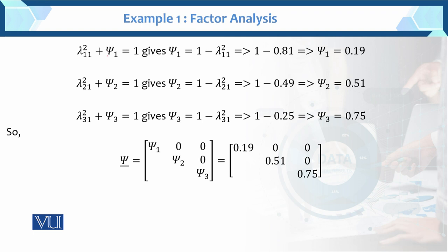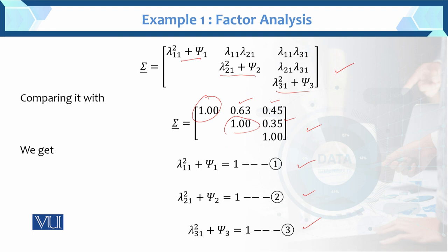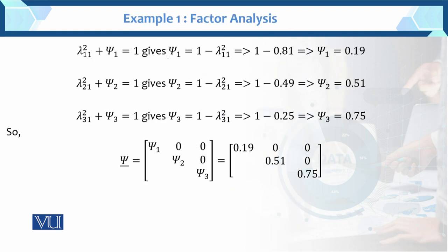Using equations 1, 2, and 3 — lambda_11 squared plus psi_1 equals 1 — we solve for psi values. After simplification: psi_1 equals 0.19, psi_2 equals 0.51, psi_3 equals 0.75.